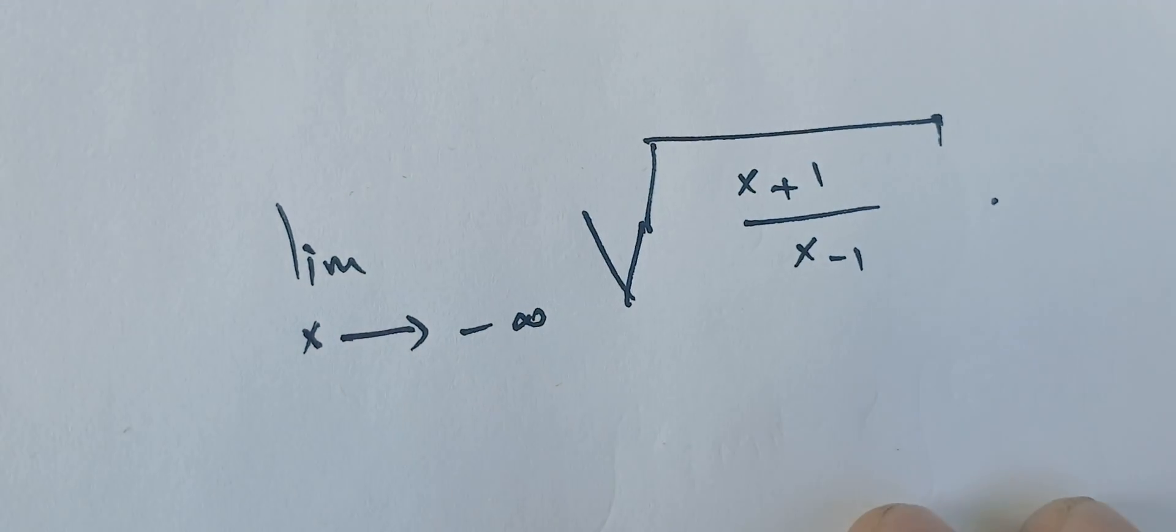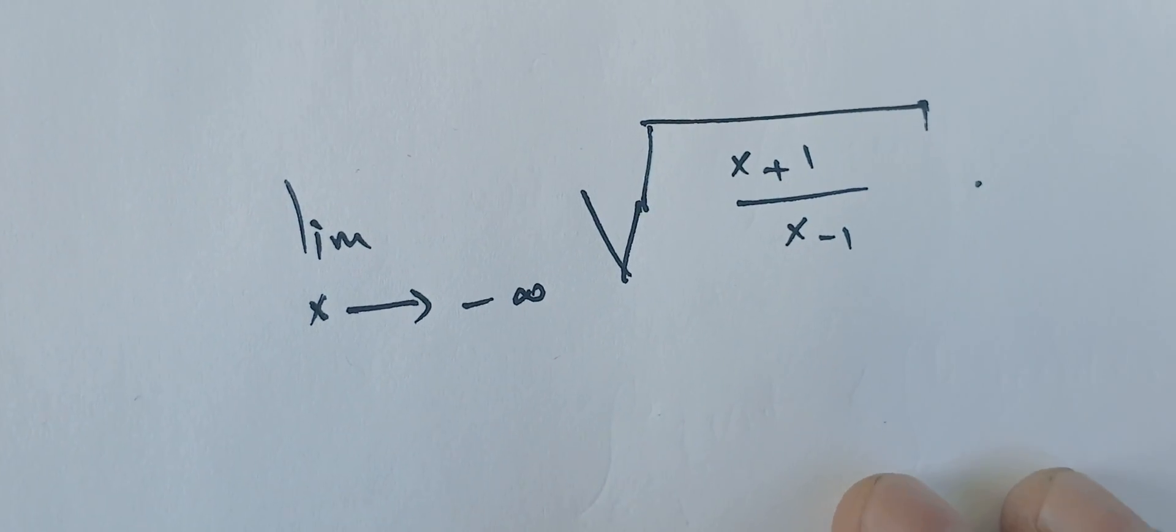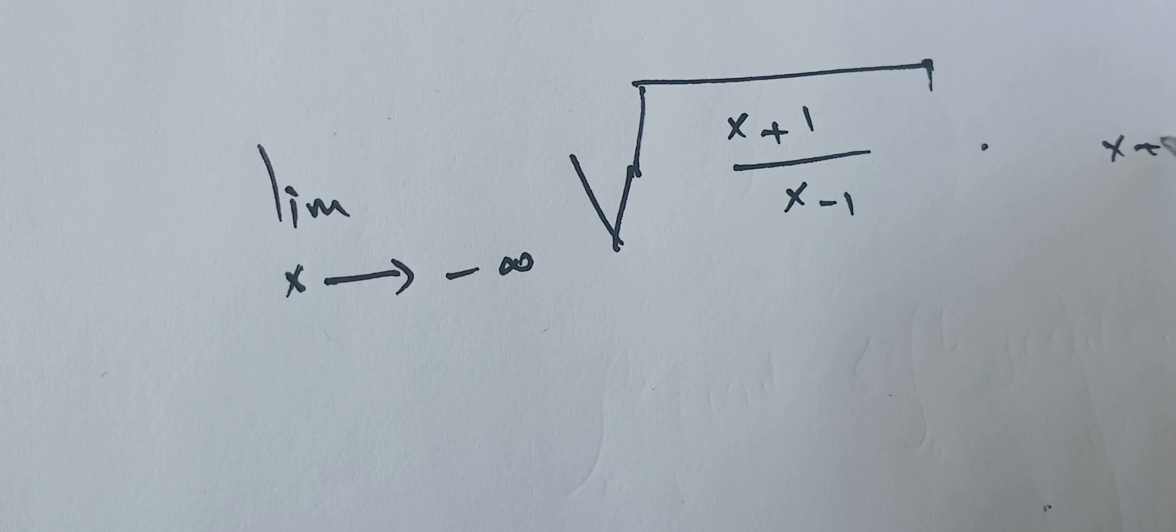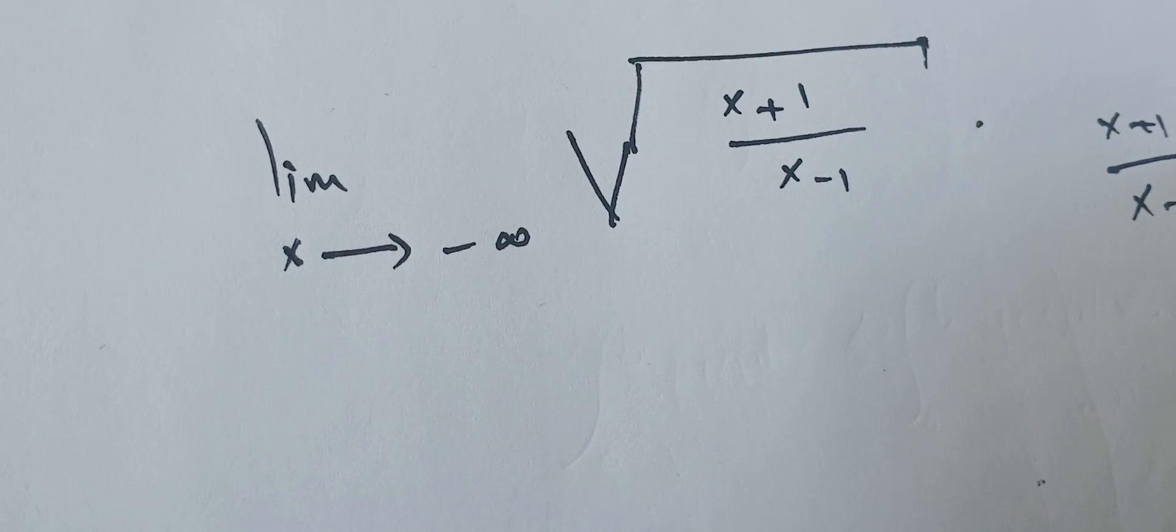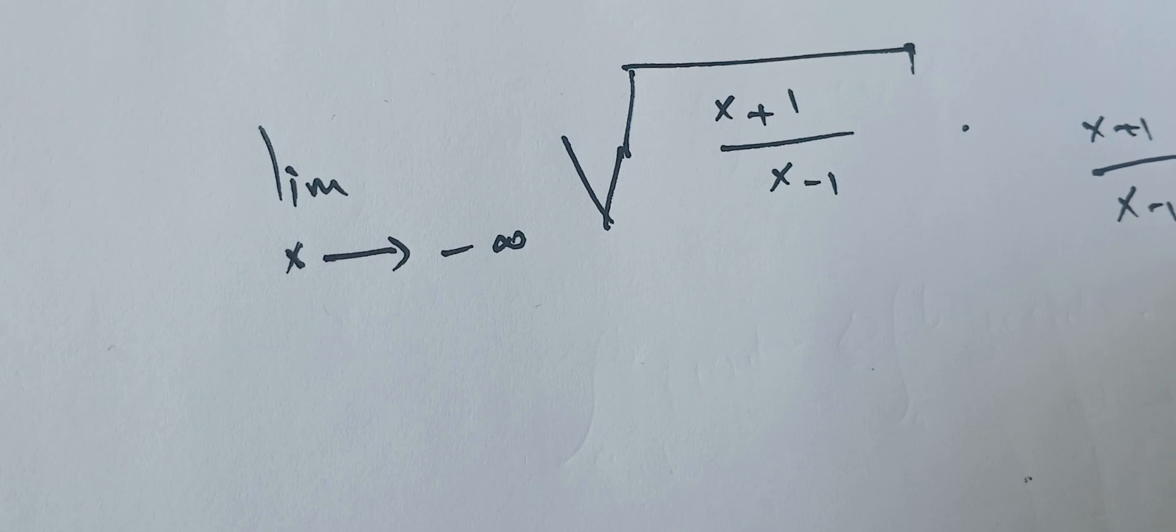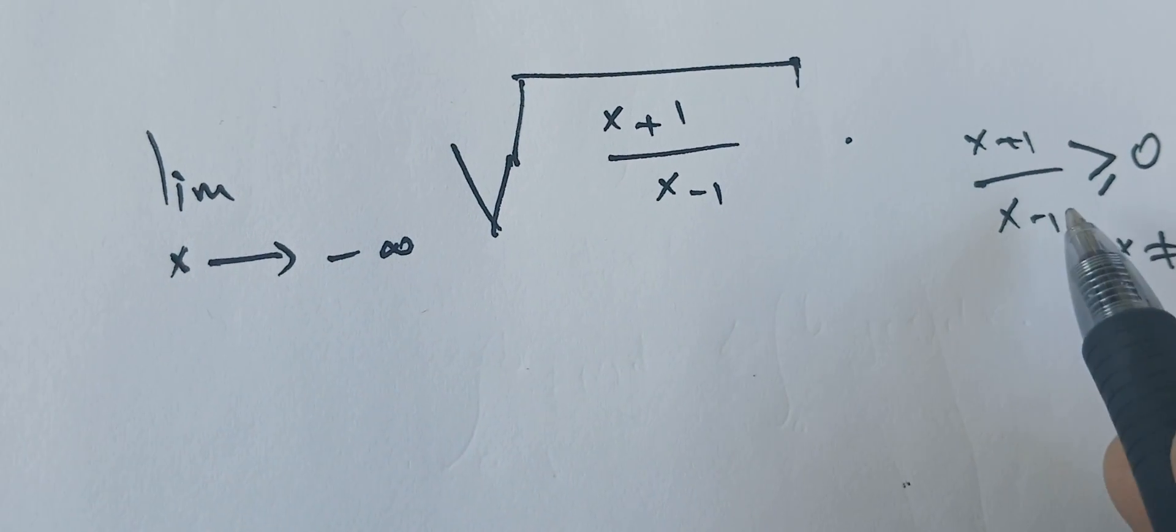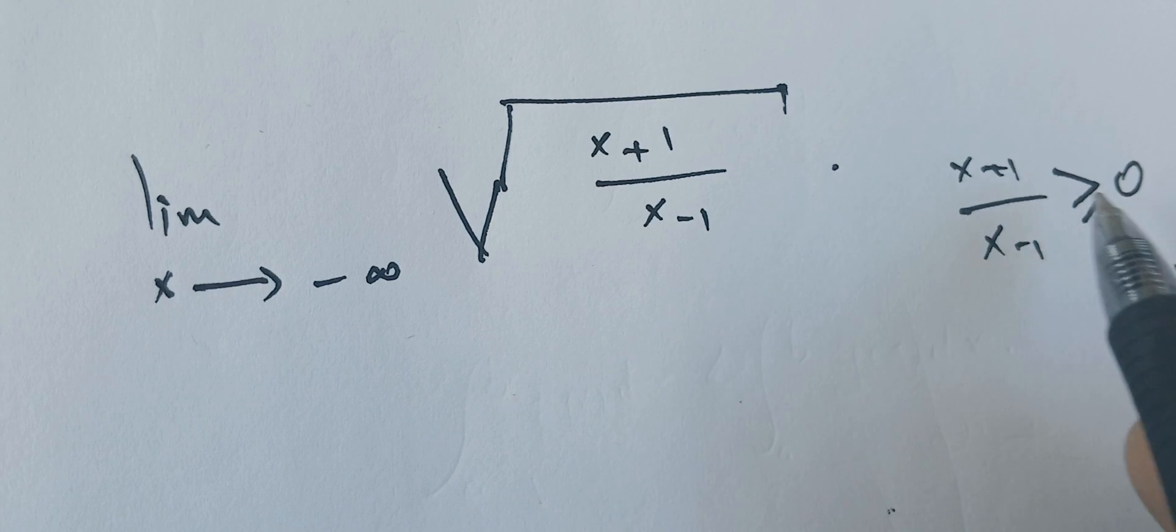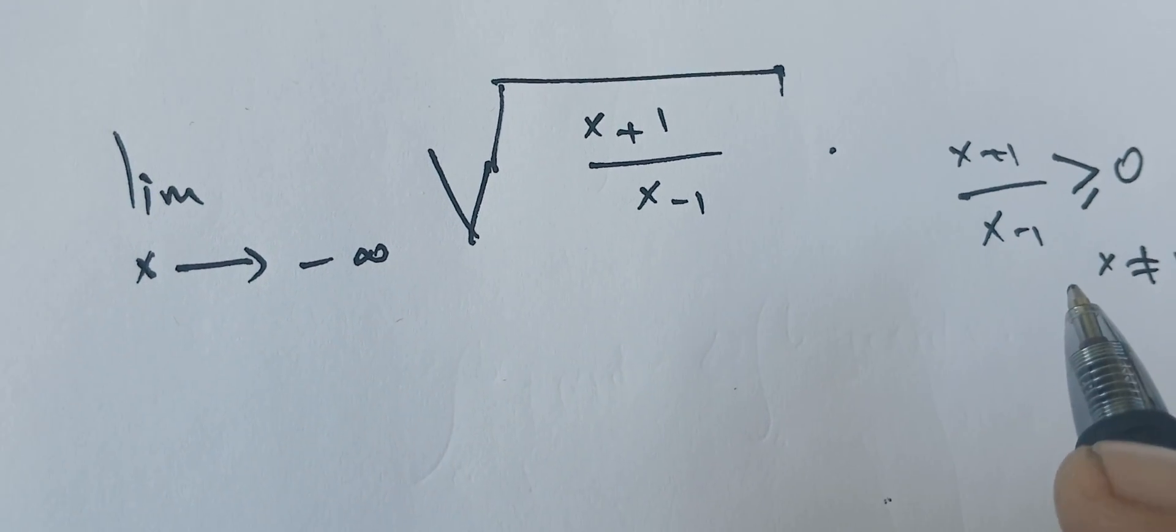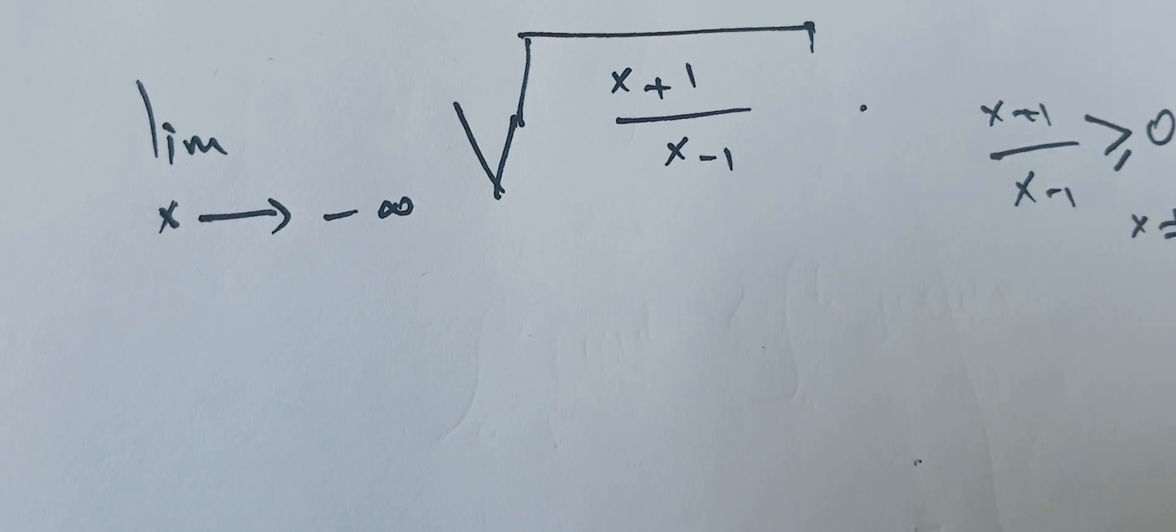The starting point here is that we can find the domain for this function. The key is that we need to have x plus 1 over x minus 1 greater than or equal to 0, with x different from 1, because 1 would make this undefined—we don't want to divide by 0.